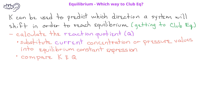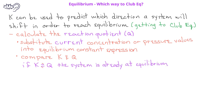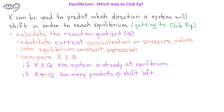If the equilibrium constant has the same value as the reaction quotient, that's an indication that the reaction is currently at equilibrium. However, if the equilibrium constant is less than the value of the reaction quotient, that indicates there are currently too many products and not enough reactants, so the system will shift to the left to use up some of the products and form more reactants.